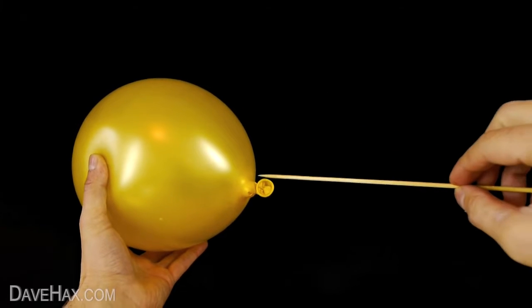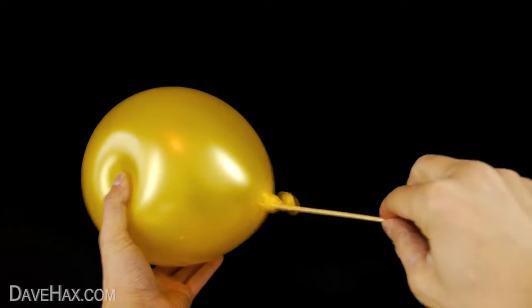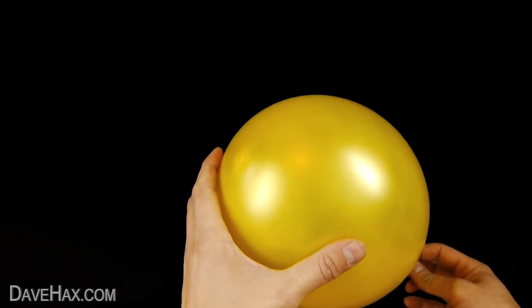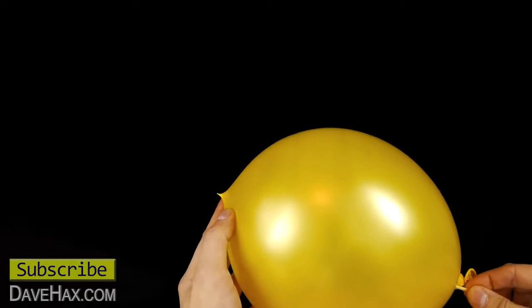You should now be able to push it straight into the bottom of the balloon without it popping. Then line it up with a thick bit of rubber at the top and carefully push it on through.